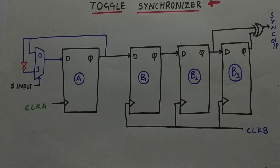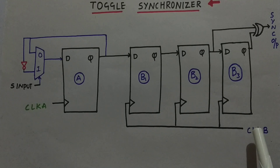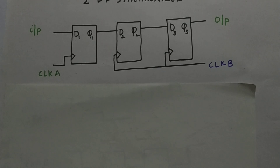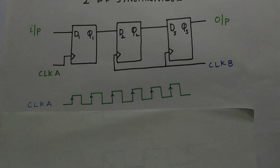Coming to toggle synchronizers — in a two-flop synchronizer, we cannot synchronize a pulse. That's a major drawback: we cannot synchronize a pulse from a quick clock domain to a moderate clock domain. Let us look at the case where a two-flop synchronizer is unable to synchronize a pulse. As you can see in this diagram, we have two clock domains, clock A and clock B. Input is given at clock A domain and output is taken from clock B domain.